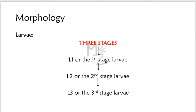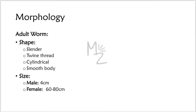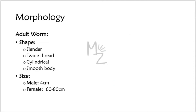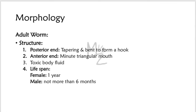The L3 is responsible for causing infection in human beings. Adult worm shape: it is slender, twine thread-like in shape — cylindrical with a smooth body. Size: the male is 4 centimeters while the female is 60 to 80 centimeters. Color of the adult worm is white. Structure: the Dracunculus medinensis has two ends — the anterior end has a minor triangular mouth.